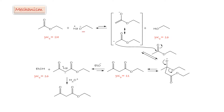The mechanism starts with an acid-base reaction where ethoxide acts as a base on the acidic alpha hydrogen, forming an enolate and ethanol. The pKa of ethanol is 16, and the pKa of ethyl acetate is 24, so the equilibrium shifts to the left. But we have some enolate in the medium, and a little bit will react with another molecule of ethyl acetate via nucleophilic acyl substitution — addition followed by elimination of ethoxide — to form the beta-keto ester.